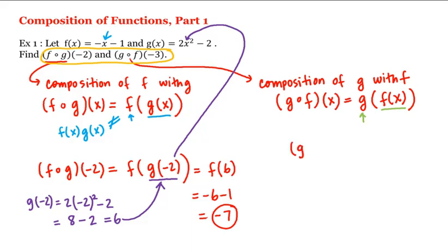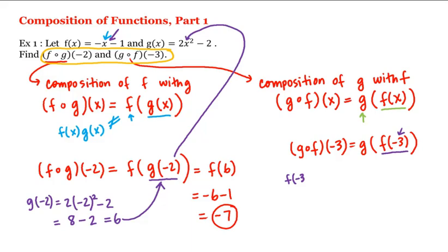And what about the second value? g composed with f evaluated at negative 3 is g of f of negative 3. We first need to compute f of negative 3 by plugging in negative 3 wherever we see an x: f of negative 3 is equal to negative negative 3 — be careful — minus 1, or 3 minus 1, which is 2.